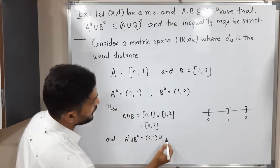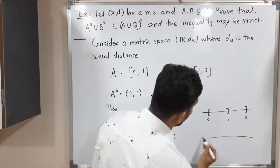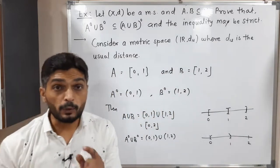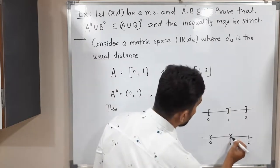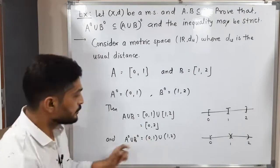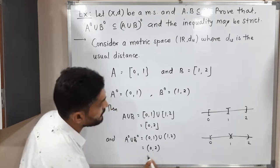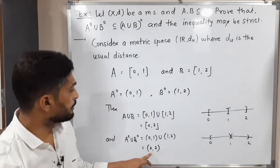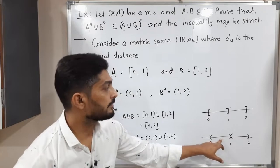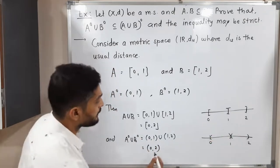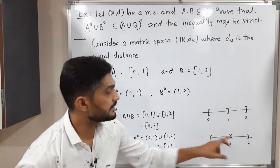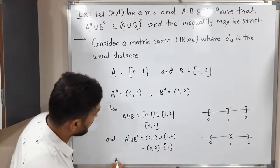Now let us find interior of A union interior of B. That is (0,1) union (1,2). On the number line, (0,1) does not contain 0 or 1, and (1,2) does not contain 1 or 2. Their union is not (0,2), because the point 1 is not included in either set. So interior of A union interior of B equals (0,2) minus {1}.